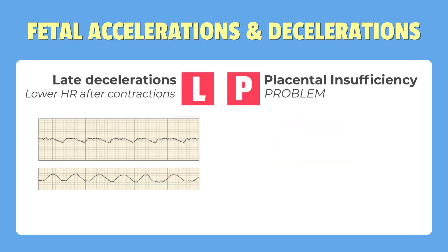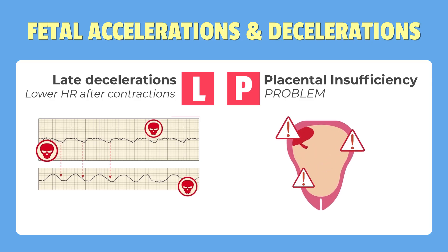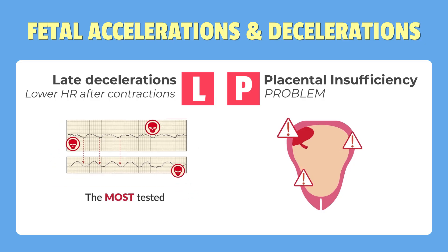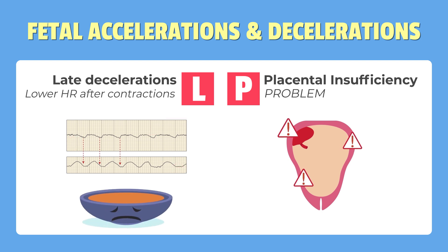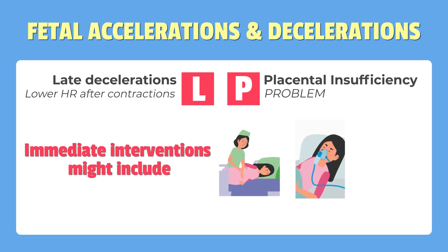L represents late decelerations, often due to placental insufficiency. This is the most concerning pattern, where the heart rate decreases after contractions for 30 seconds or more. It suggests that the baby might not be getting enough oxygen through the placenta. Immediate interventions might include repositioning the mother, providing oxygen, or preparing for an emergency C-section if the issue persists.